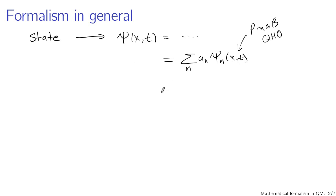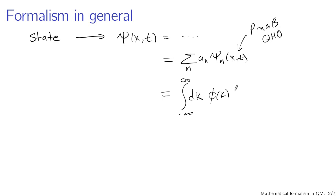We also talked about representing the wave function as an integral — integrating from minus infinity to infinity instead of summing. For instance, integrating dk if we're working with the free particle, with some coefficient phi of k telling you how much of each stationary state to include. Those free particle states look like e to the i(kx minus h-bar k squared over 2m times t), with a normalization of one over the square root of 2 pi.